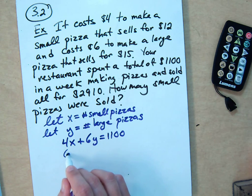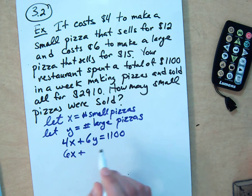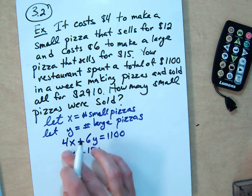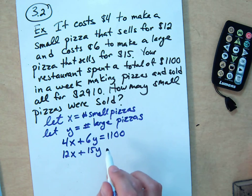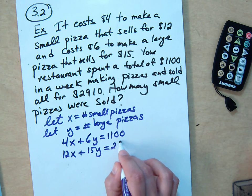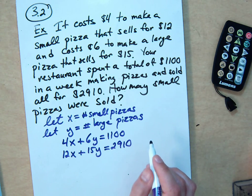And the other is what you're selling for your profit. You're selling the small ones for $12. You're selling the large ones for $15. And you made $2,910. So those are the two equations that you're solving.